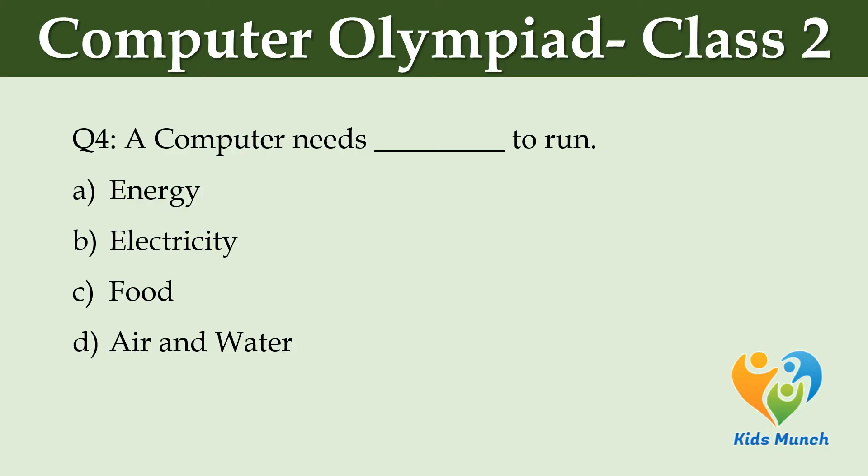A computer needs dash to run. Option A: Energy. Option B: Electricity. Option C: Food. Option D: Air and water.